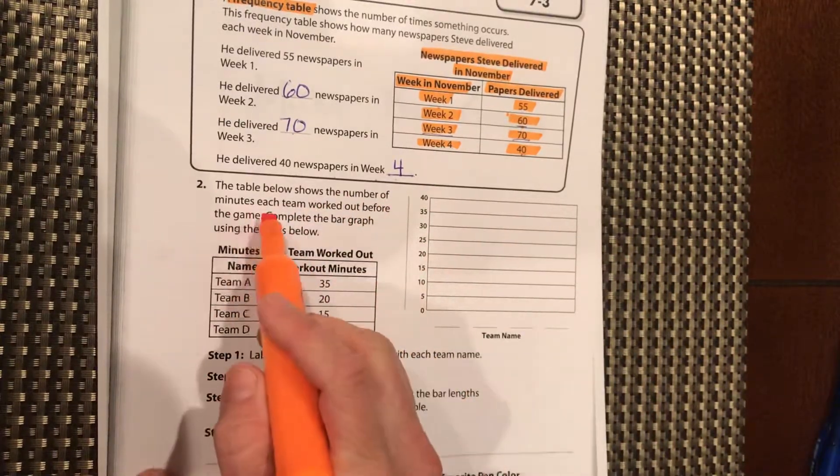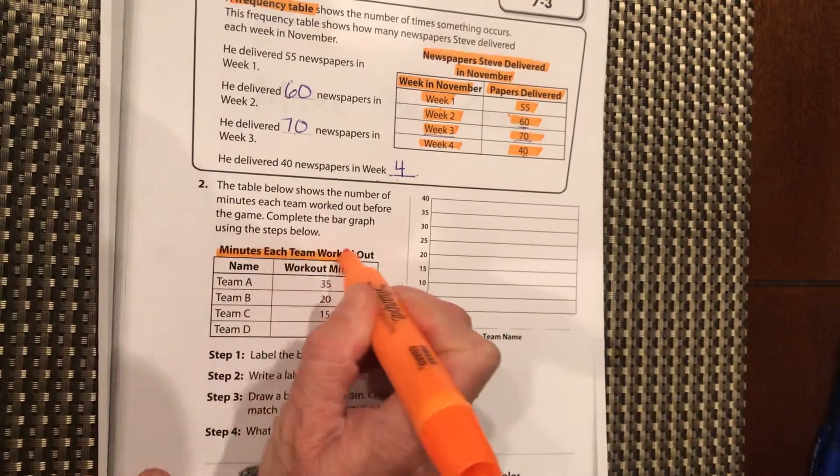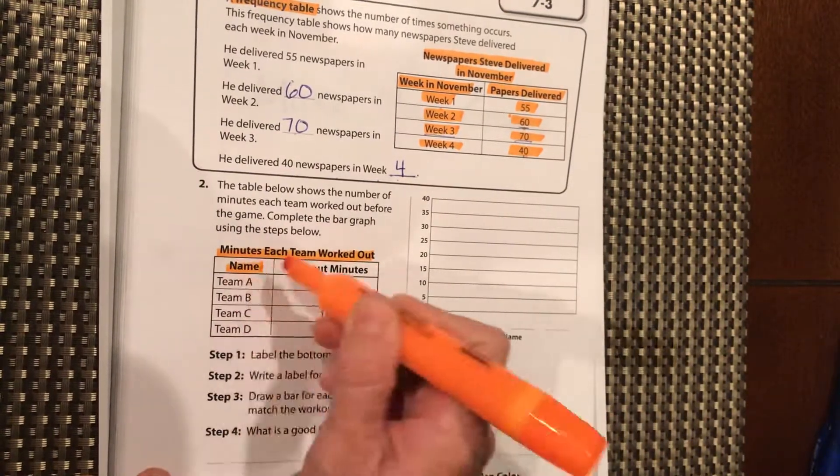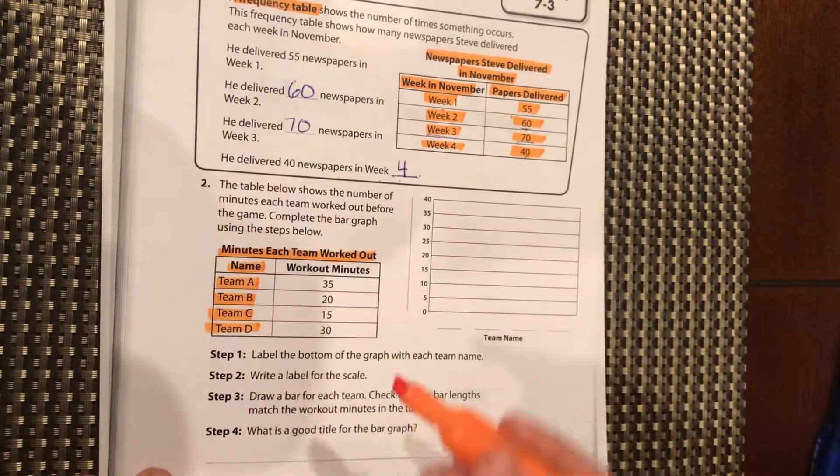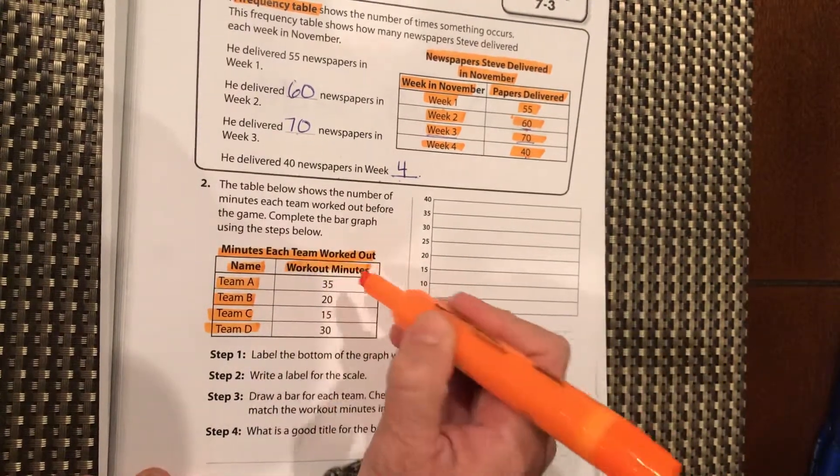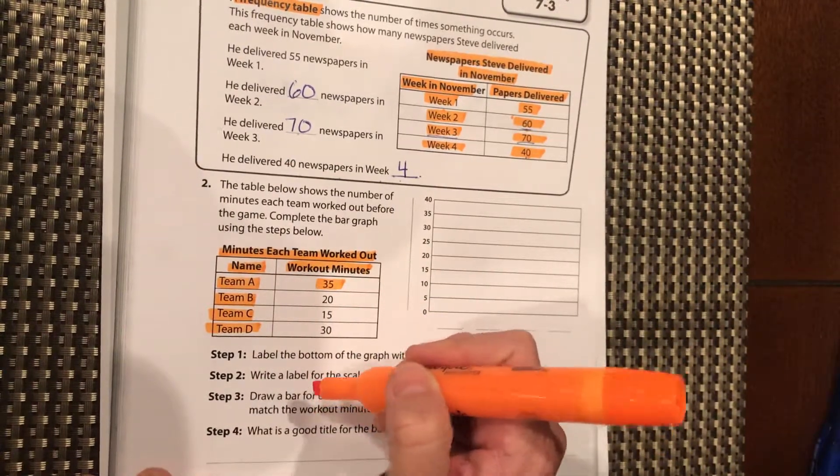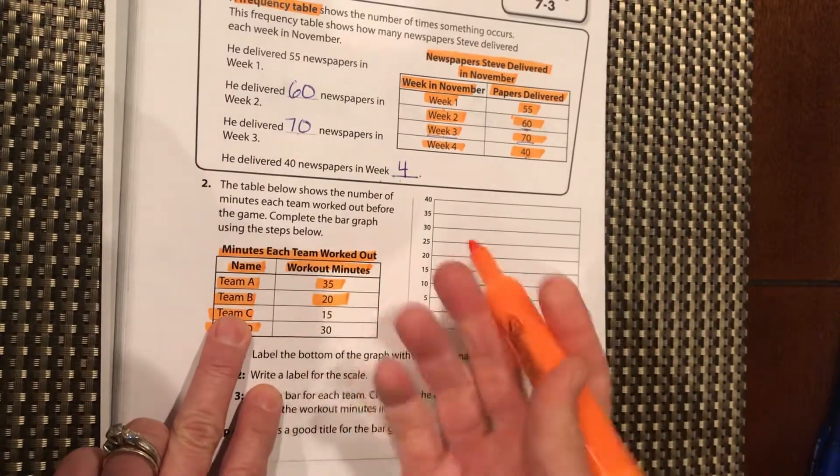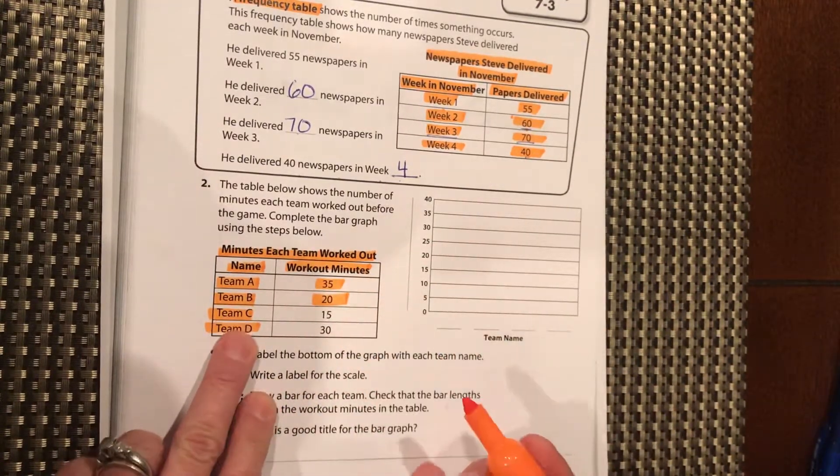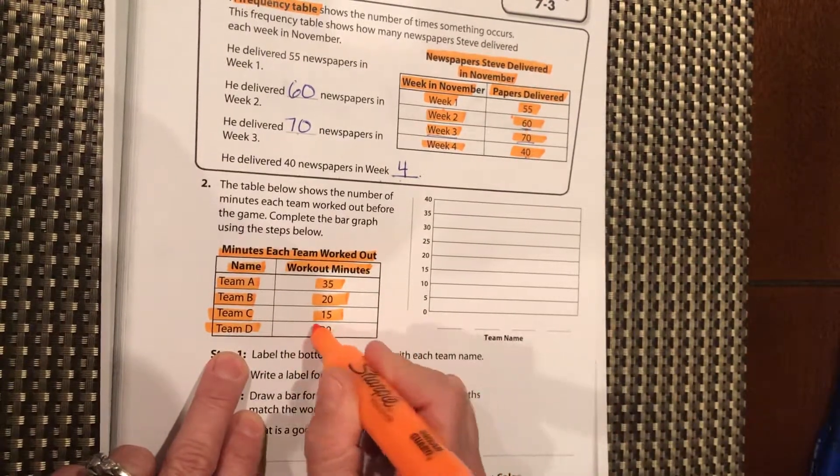The table below shows the number of minutes each team worked out before the game. Minutes each team worked out. Team name: you have team A, team B, team C, team D, and the workout minutes. Team A worked out 35 minutes before the game, like stretching, running around. Team B warmed up or worked out for 20 minutes before the game. Team C, 15 minutes, and team D, 30 minutes.